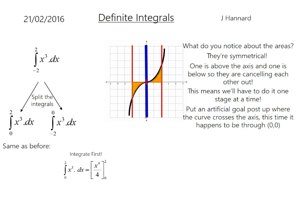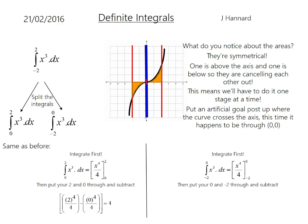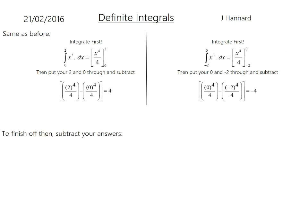And similarly, you get that. Put your 0 and minus 2 through, you get that, which is minus 4. And then subtract your answers, and you'll get 8.